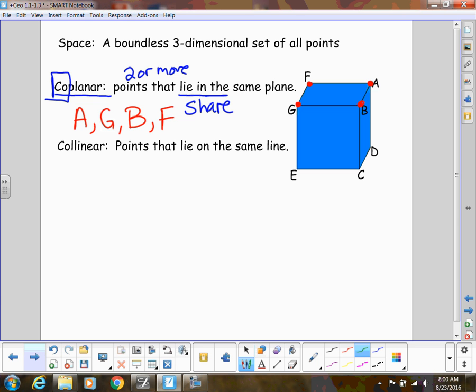So having said that, now that we're looking at the word collinear, co means share and linear. So that means a line. So it's going to be points that share the same line. So you can replace that with share if that makes more sense to you. So, for example, in this cube, if I extend this, this is a line. E and C are collinear. They share the same line.